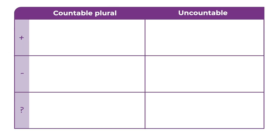Much, many, a lot of. We use 'a lot of' to talk about quantity. For example: There are a lot of vegetables in our fridge. I get a lot of sleep.